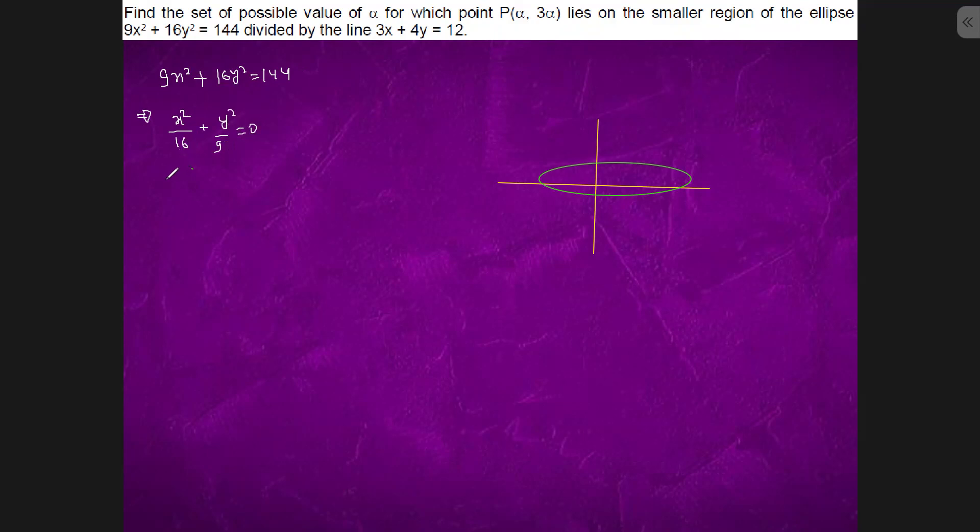From here we can find a = 4, b = 3. So this is (4, 0), (-4, 0), and this is (0, 3).